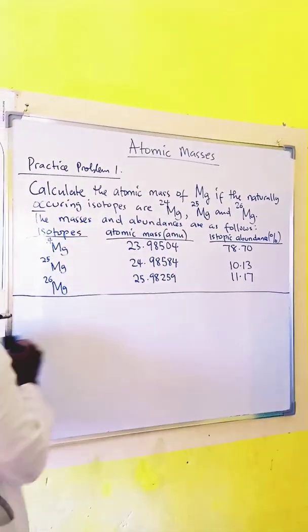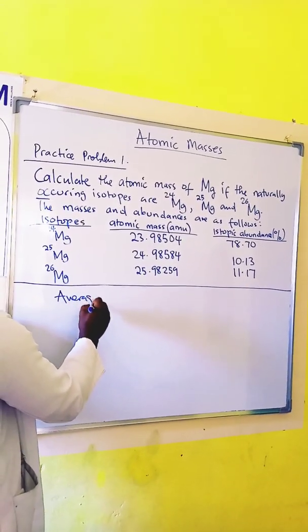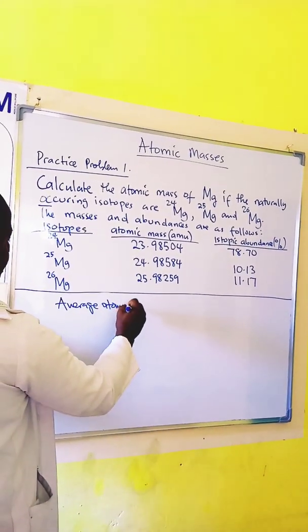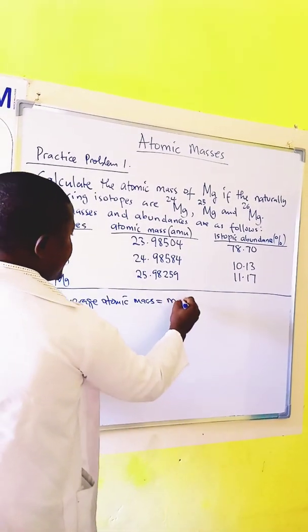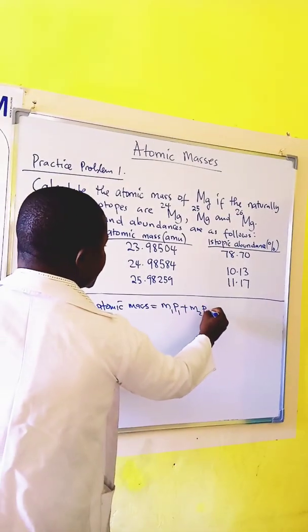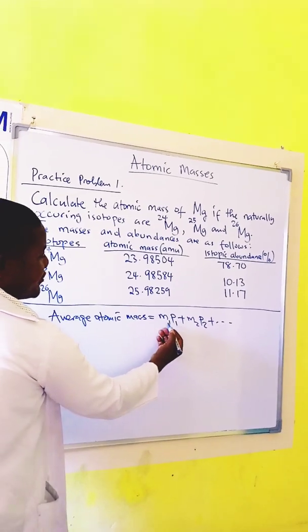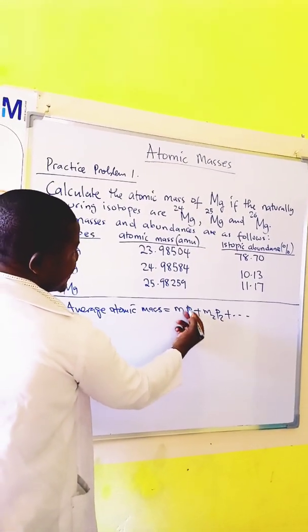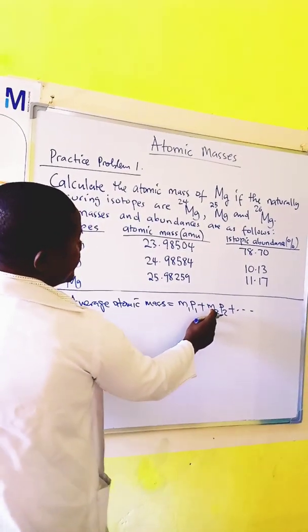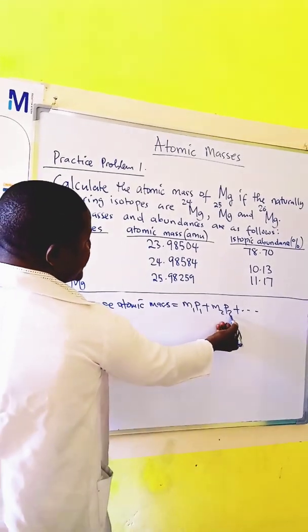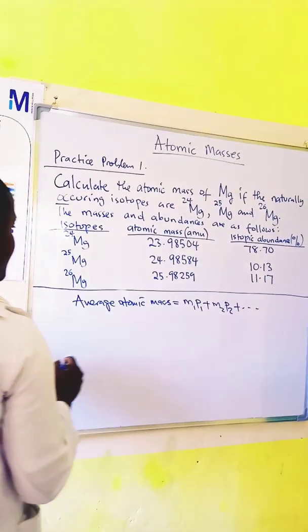So we can calculate atomic mass using the formula. Average atomic mass is equal to M1P1 plus M2P2 and so on, where M1 is the mass of isotope 1 in amu and P1 is the percentage of isotope 1 in decimal. M2 is the mass of isotope 2 in amu and P2 is the percentage of isotope 2 in decimal.